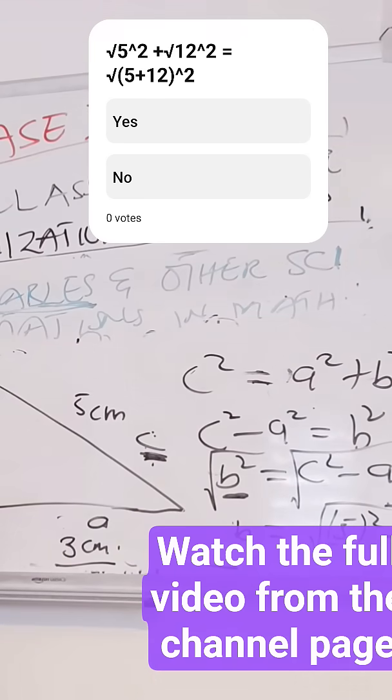And we're going to get b is equal to the square root of 25 minus 9. So b will be square root of 16, and 16 is a perfect square.